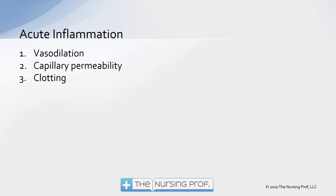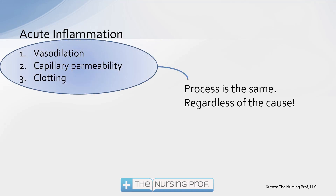Acute inflammation has three main components: vasodilation, capillary permeability, and clotting. The process is going to be the same regardless of what's causing the inflammation — whether it's stepping on a nail or developing a respiratory infection that leads to ARDS. That acute inflammation process is the same: vasodilation, capillary permeability, and clotting.